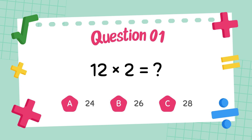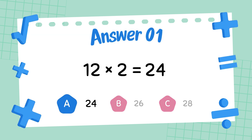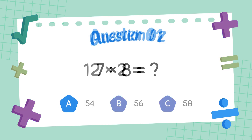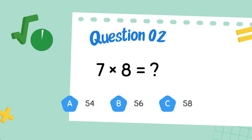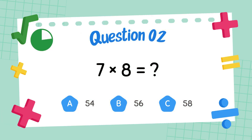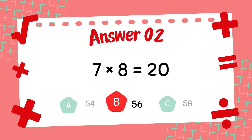What is 12 times 2? The answer is 24. What is 7 times 8? The answer is 56.